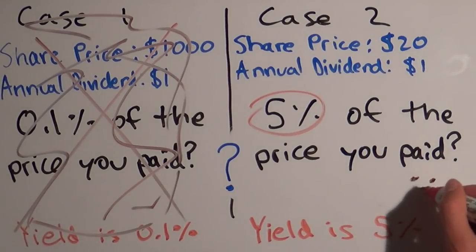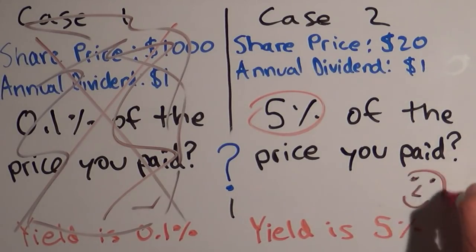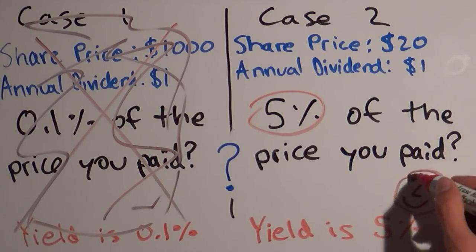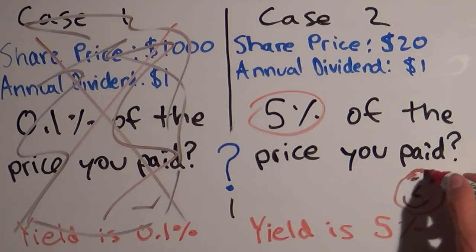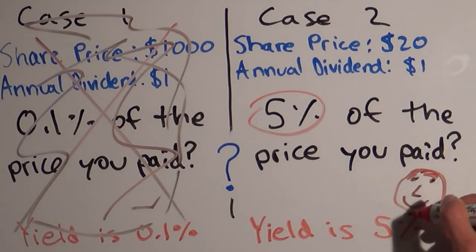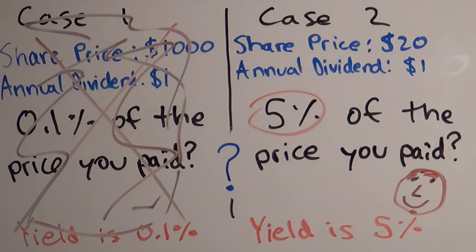If we're only looking at dividends, paying twenty dollars to get an annual dividend of one dollar is better than paying one thousand dollars to get that same annual dividend of one dollar.